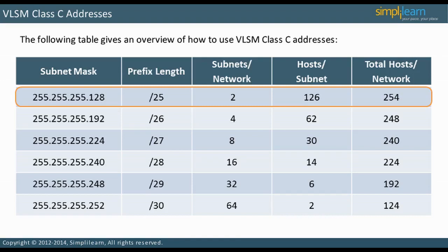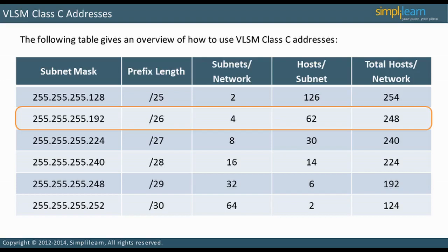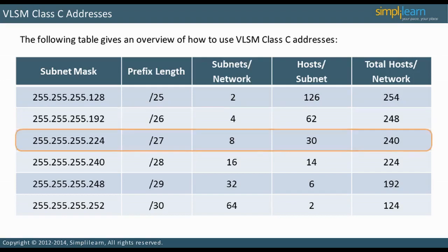With a mask of 255.255.255.192, a slash 26 prefix length, there will be four subnets with 62 usable hosts per subnet, for a total of 248 usable hosts. With a mask of 255.255.255.224, a slash 27 prefix length, there will be eight subnets with 30 usable hosts per subnet, for a total of 240 usable hosts.